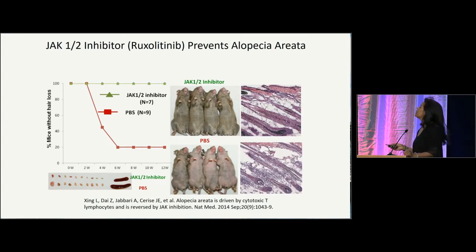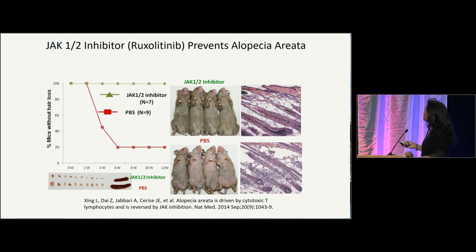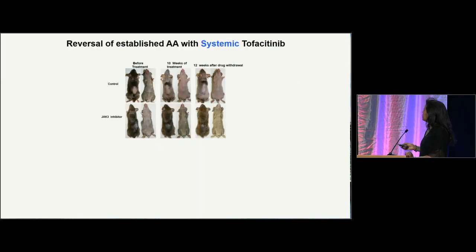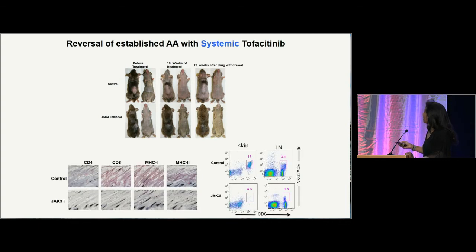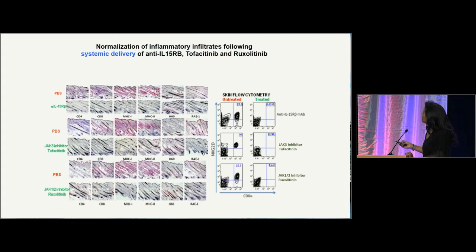Similarly, ruxolitinib, which blocks JAK1 and 2, was also able to prevent hair loss in the treated mice. Further, they were able to show that they could actually reverse established alopecia areata in the mice with systemic tofacitinib and also with ruxolitinib. And they were able to show normalization of the inflammatory infiltrates following systemic treatment with Janus kinase inhibitors.